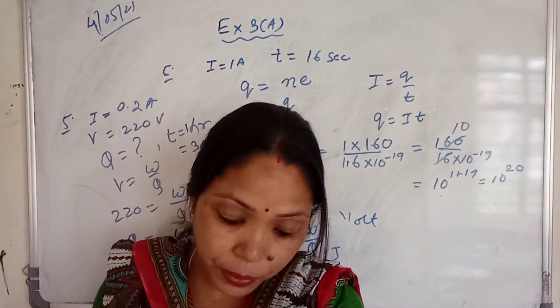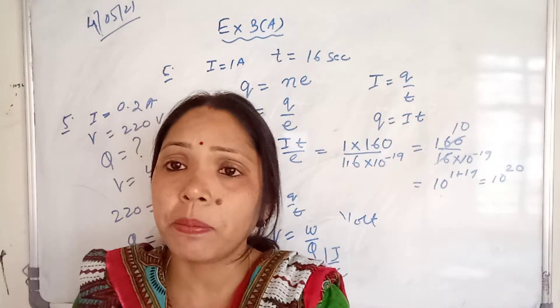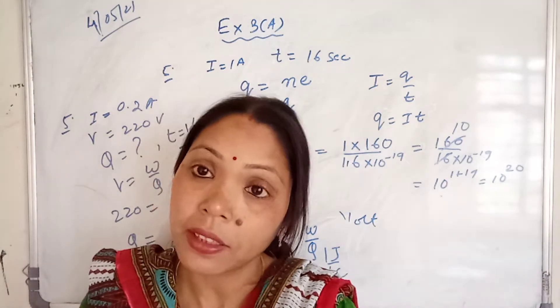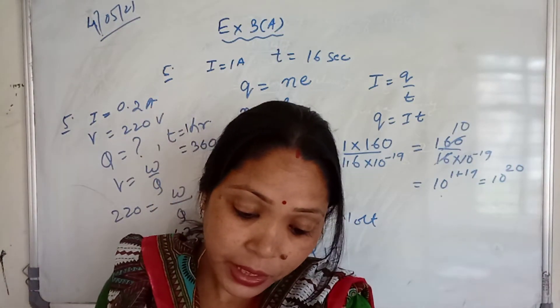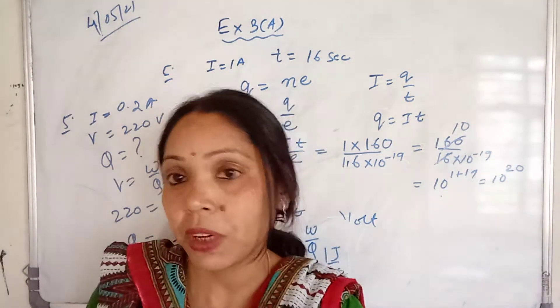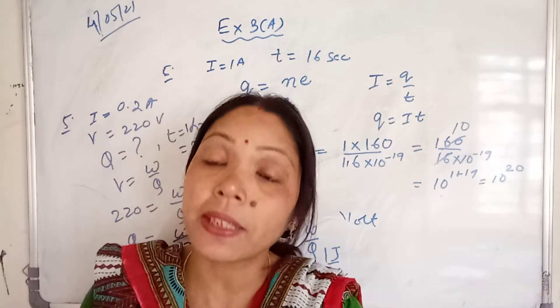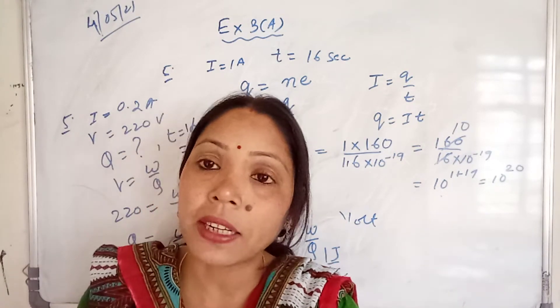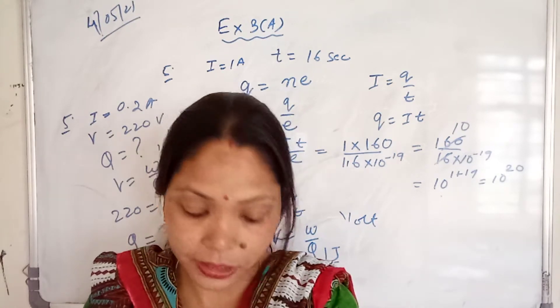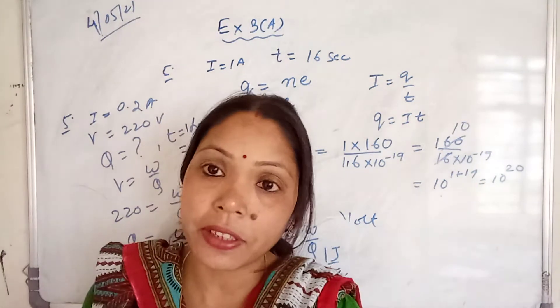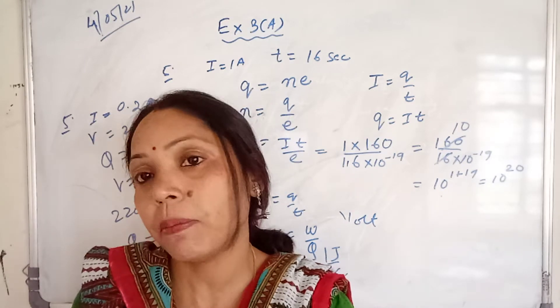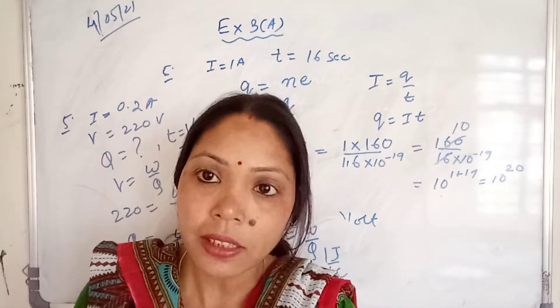Name two devices which can produce continuous current. It can be your cell, it can be battery, or it can be a dynamo generator. Which form of energy is responsible for the generation of electric current in the device named by you? If you write the battery, it means chemical energy. And if you write the dynamo or generator, then this one will be your mechanical energy. In dynamo, mechanical energy is converted into electrical energy, and in battery, chemical energy is converted into electrical energy.